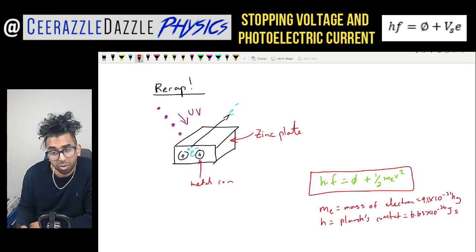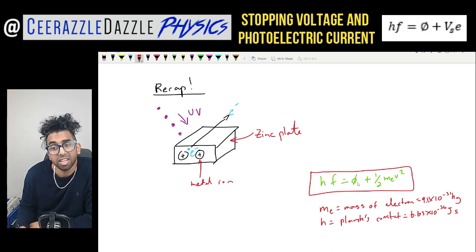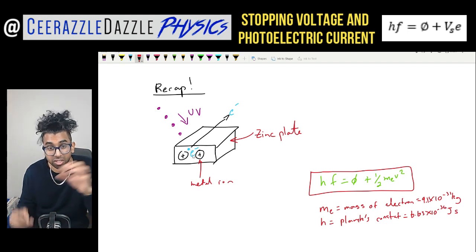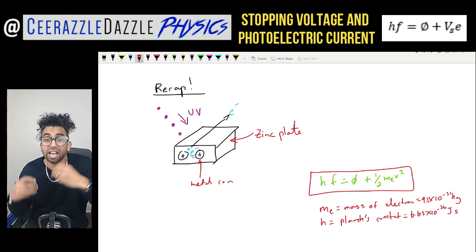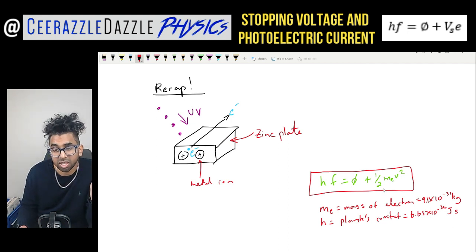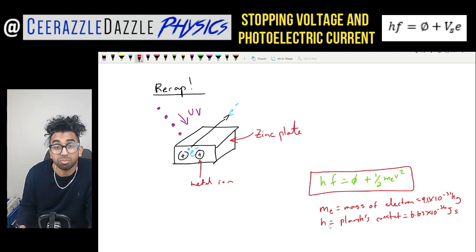This leads us to the formula HF, which is the energy of the photon, equals φ, which is the work function. The work function is the energy required to liberate the electron from its bound state — you must break that attraction first — and the rest of the energy is kinetic, hence the formula ½mEv², where mE is the mass of the electron: 9.1×10⁻³¹ kg. H is Planck's constant: 6.63×10⁻³⁴ J·s.